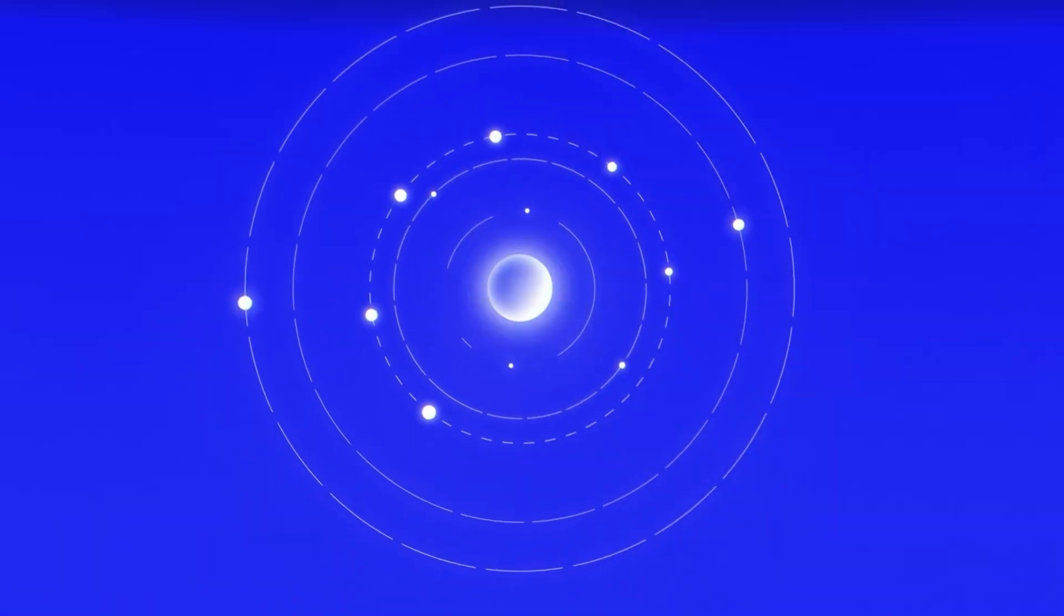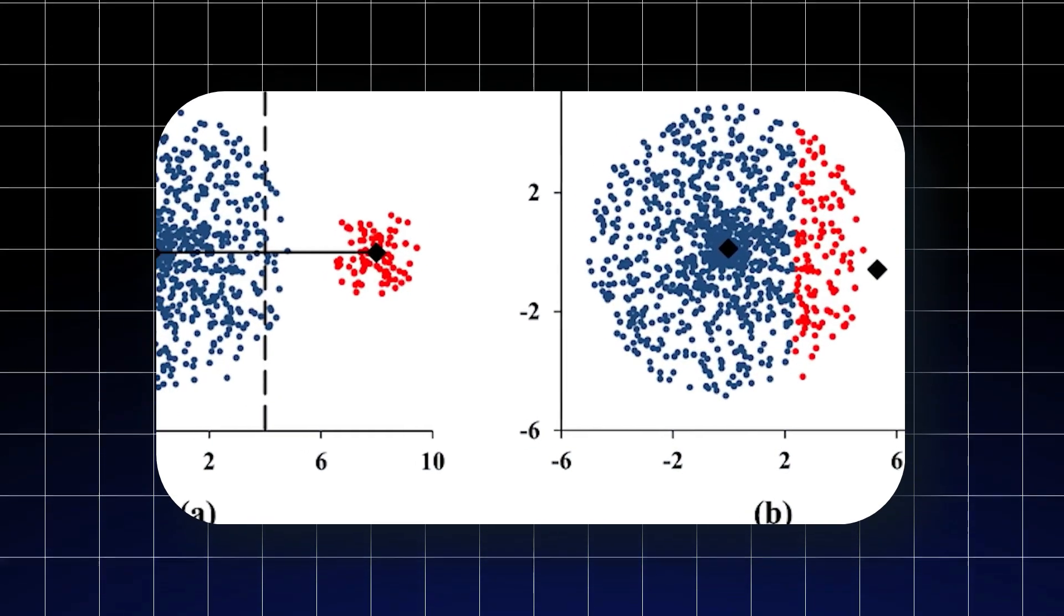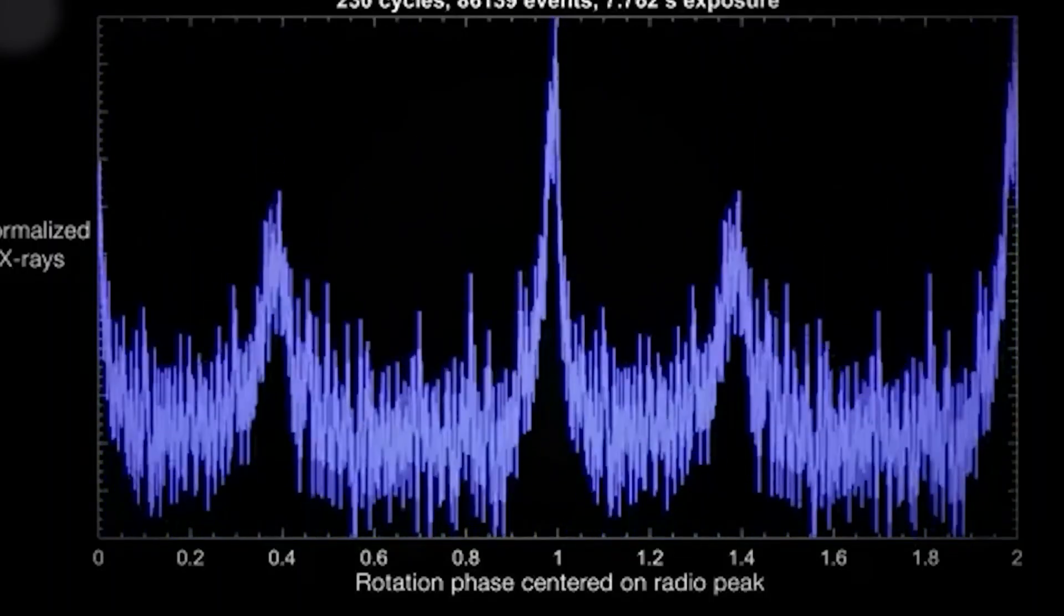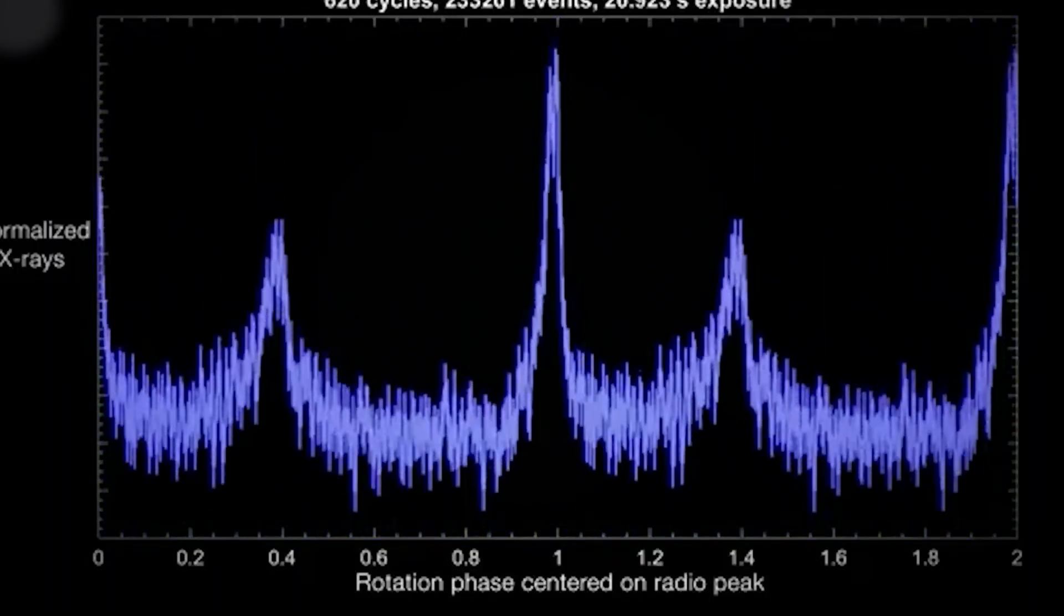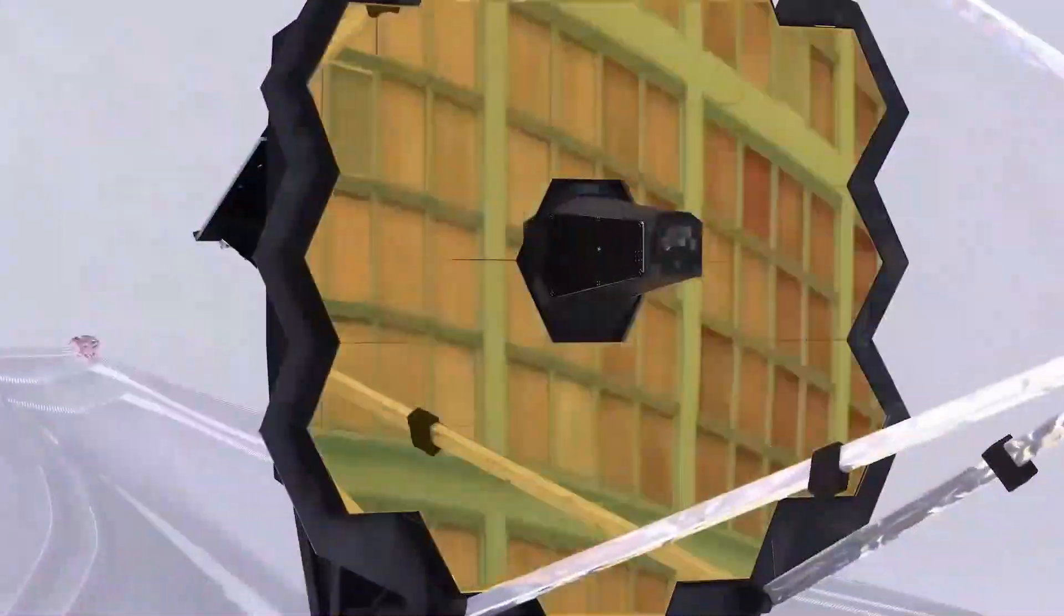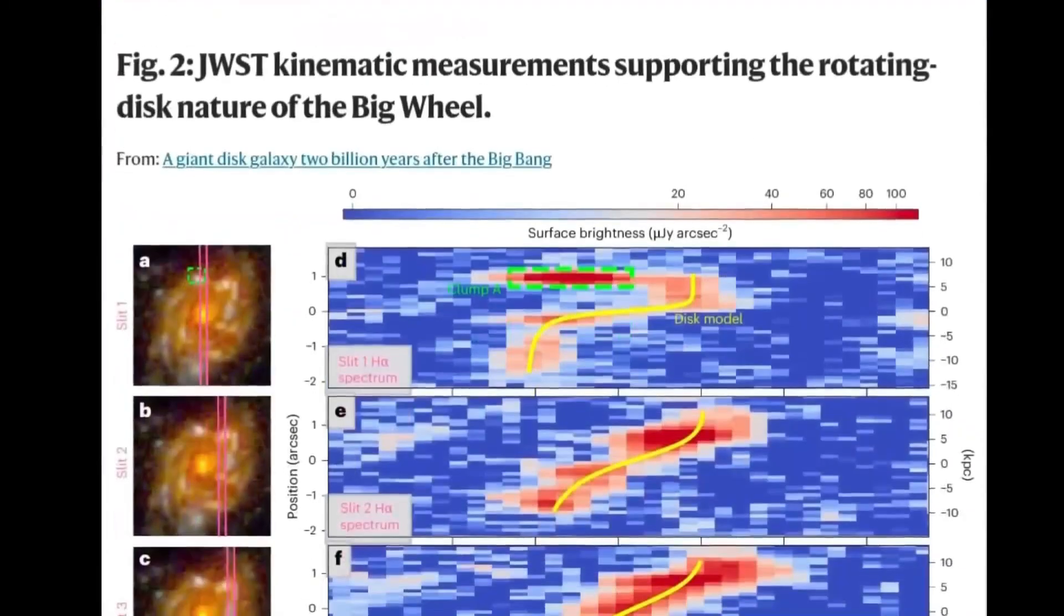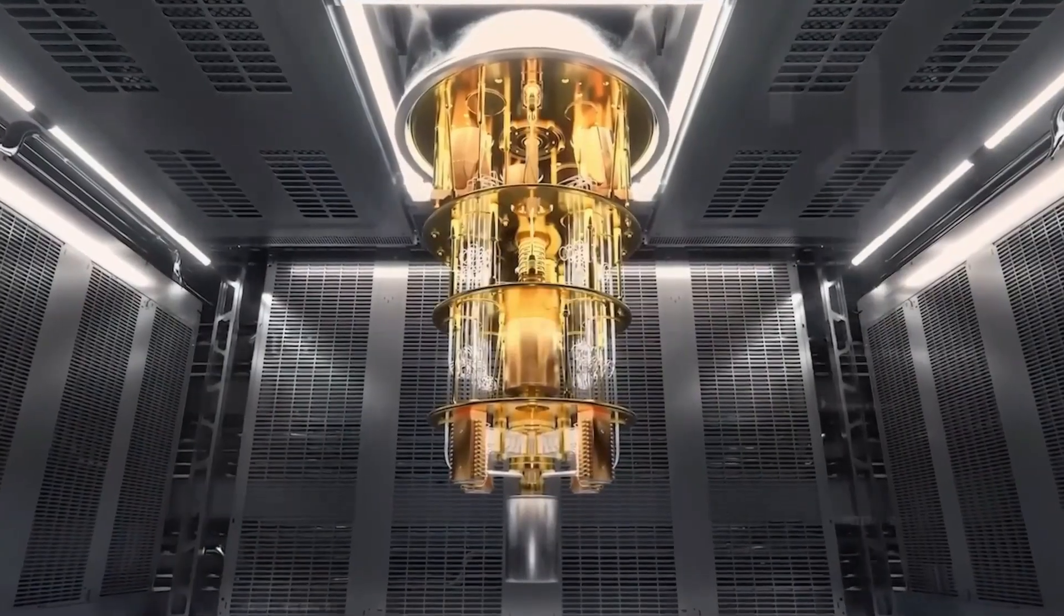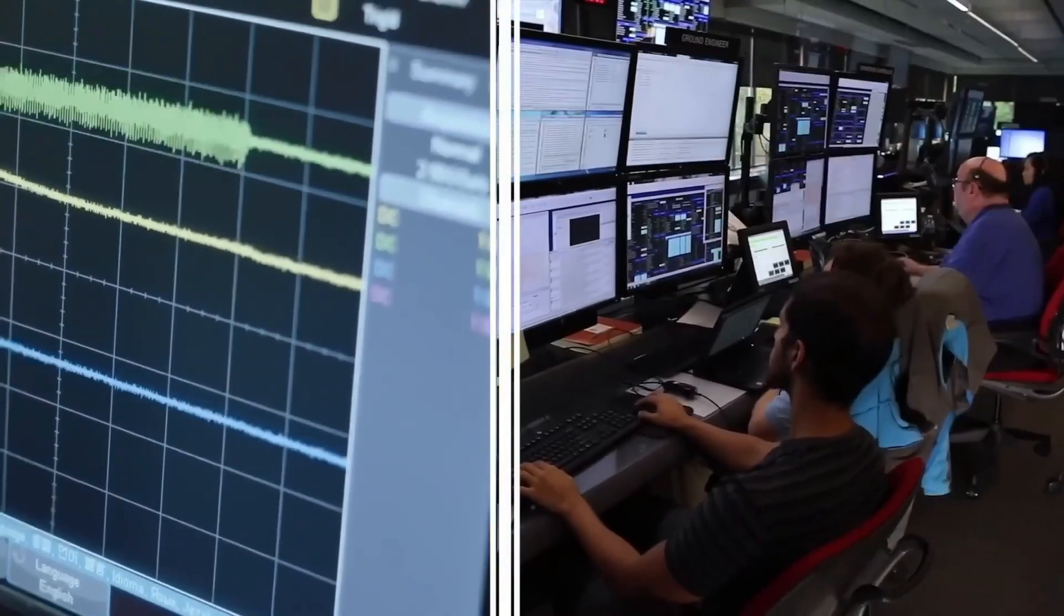Planet 9 itself remains visually elusive, not yet directly imaged in a clear and singular frame. However, the gravitational fingerprint left in the orbital choreography of its neighbors is now unmistakable. Webb's instrumentation, especially in the mid-infrared and near-infrared ranges, was instrumental in capturing the data needed, but it was the AI that rendered those signals into a coherent planetary identity.